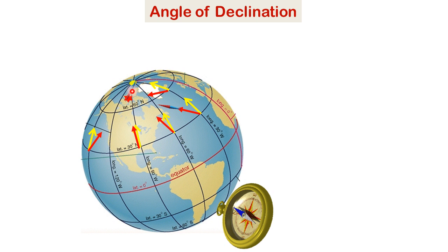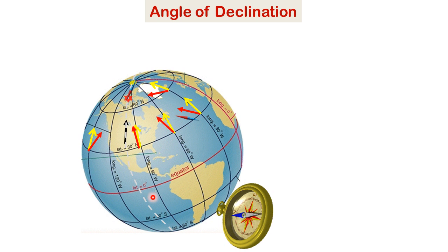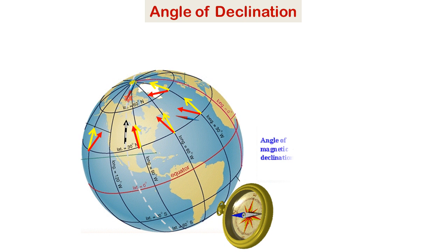The angle of declination here can be as high as 180 degrees. This is the line of no declination — along this line the magnetic north and the geographic north are aligned and the angle of declination is 0.